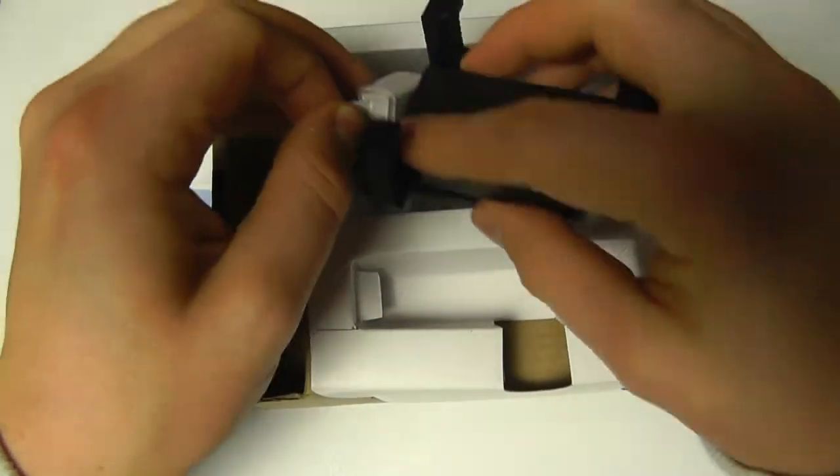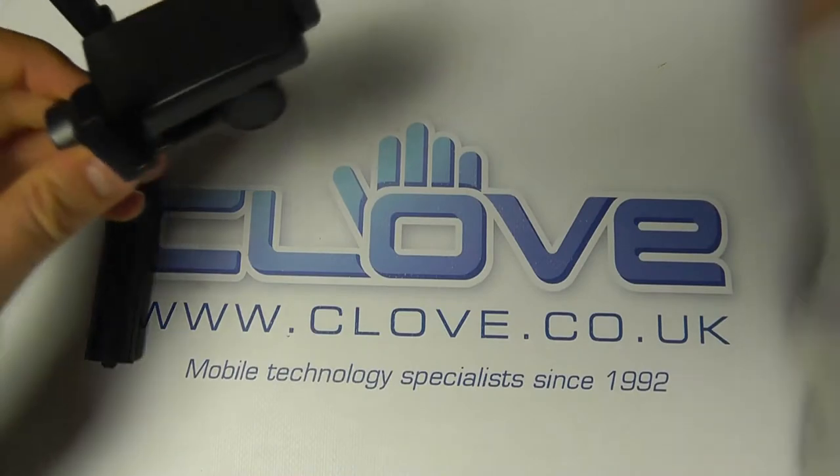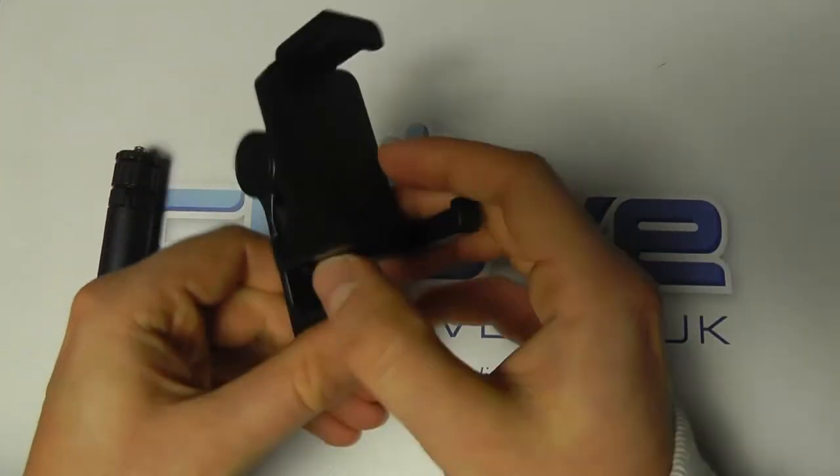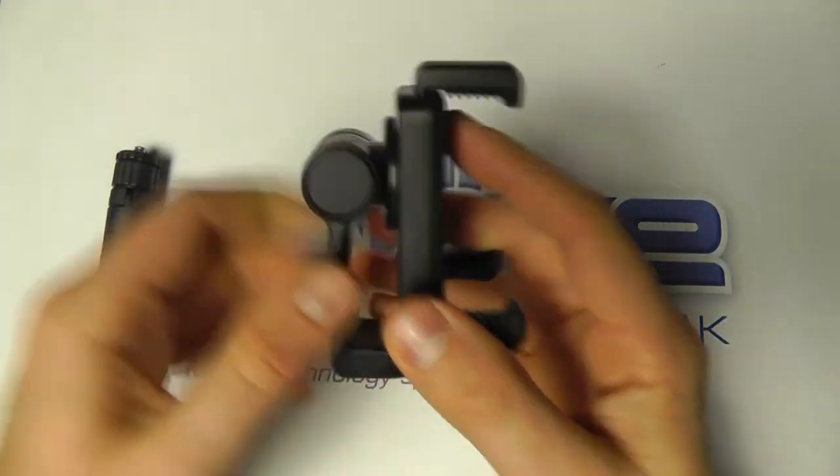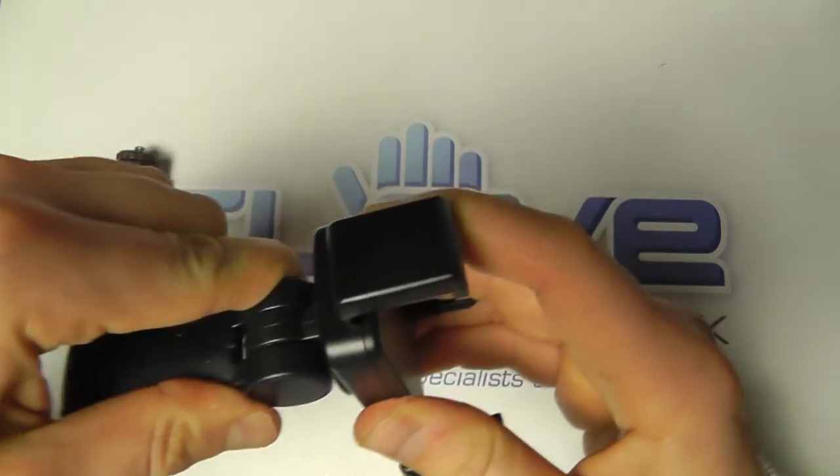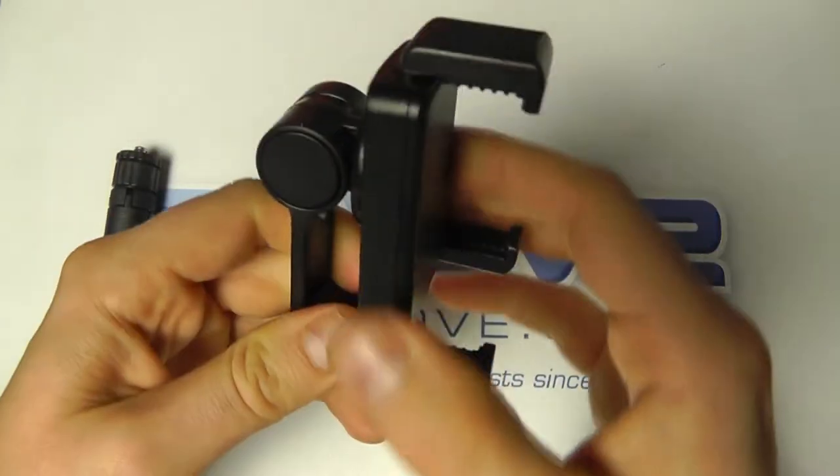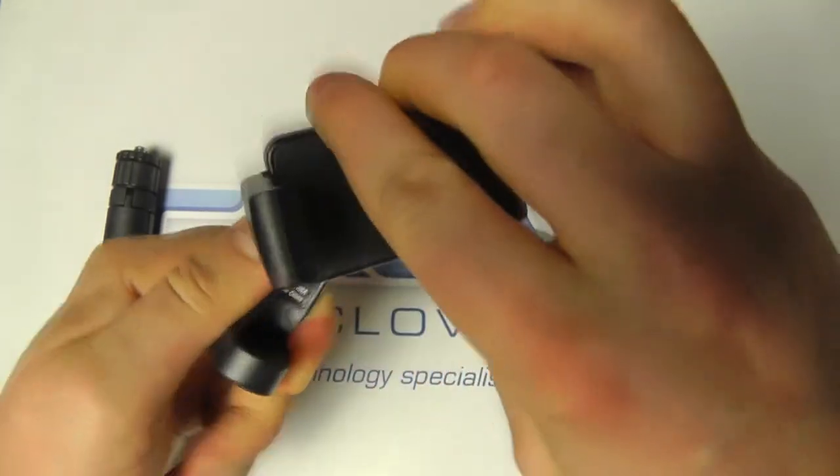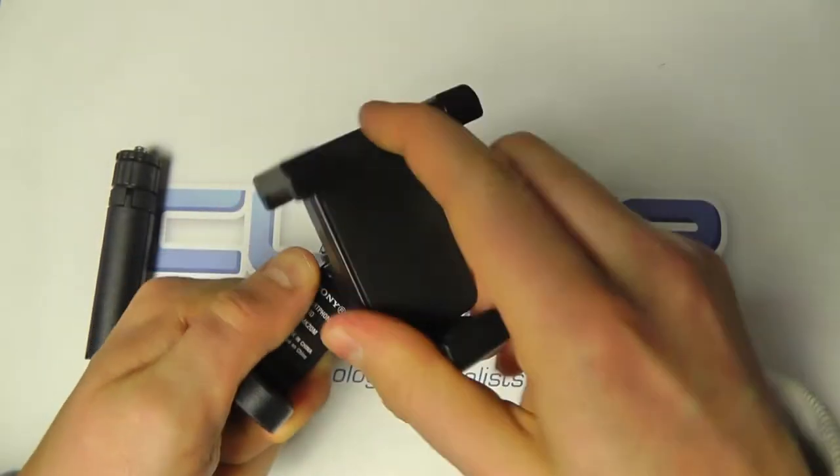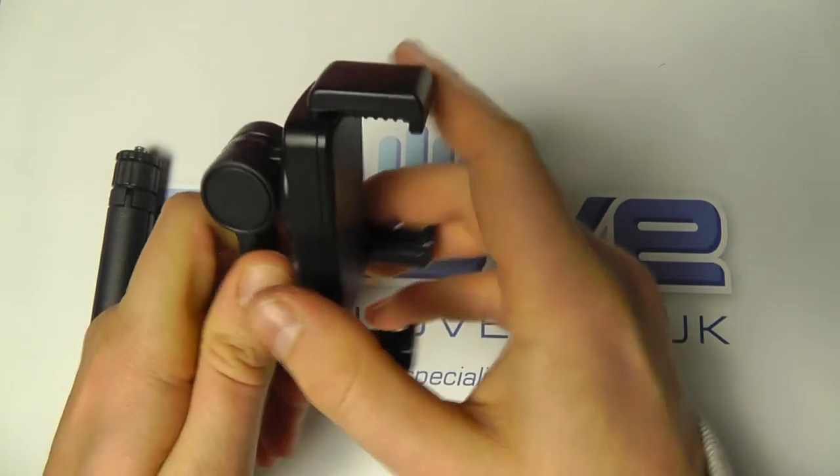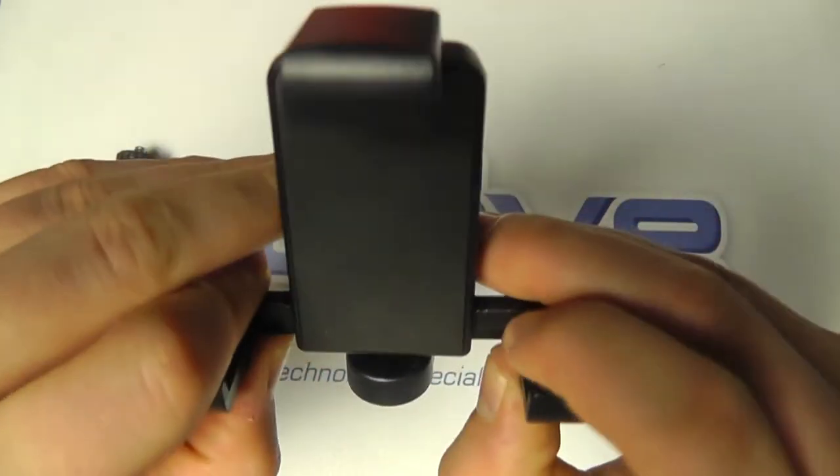We can pull out this bit here and you've got the device holder itself. As you can see, we've got the part here that actually allows the holder to move, and then you can also twist the holder 360 degrees.